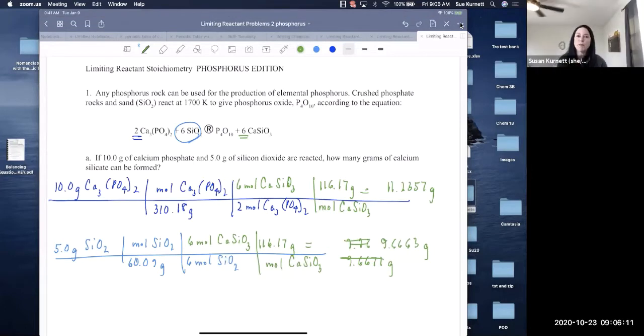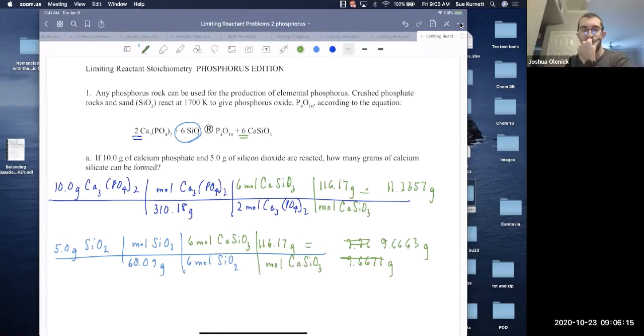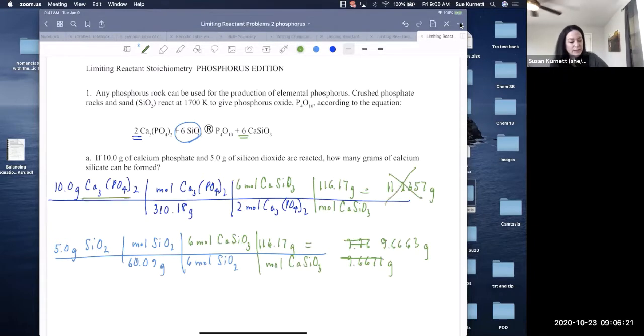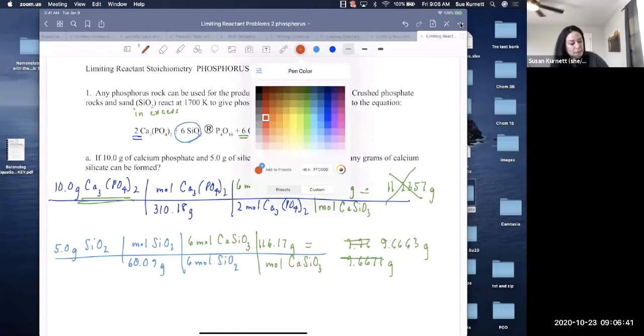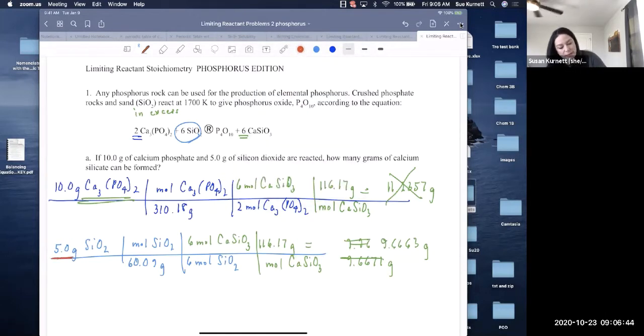Okay, so we started with both reactants in the given amounts and then we went to products. I can see that nine is less than 11, so I'm just going to cross out the 11 grams of products that would have been made by calcium phosphate. We can make at least 9.66 grams of product with calcium phosphate. In fact, we can make almost a couple grams more. That means calcium phosphate is in excess.